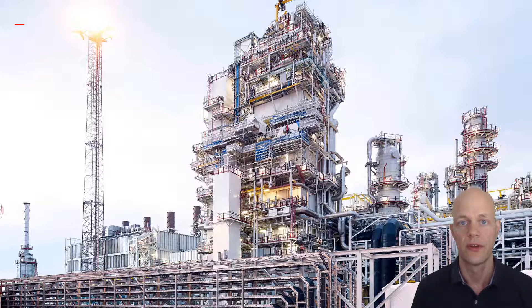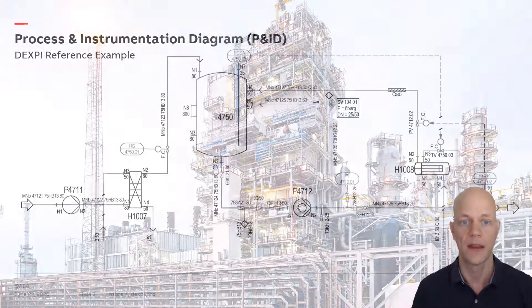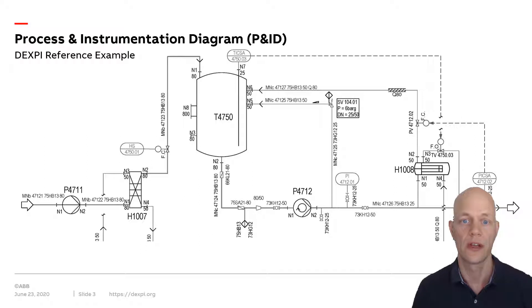When process engineers design such a plant, they use certain drawings to capture their requirements and design. Here's an example of this, called the process and instrumentation diagram. This schematic drawing captures the requirements for a certain plant segment.